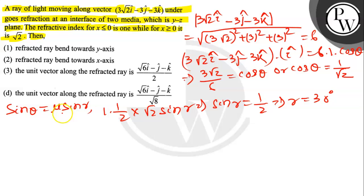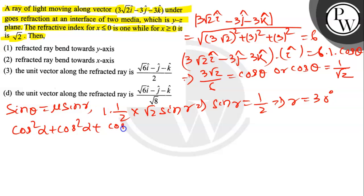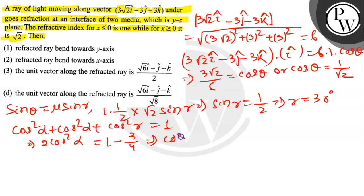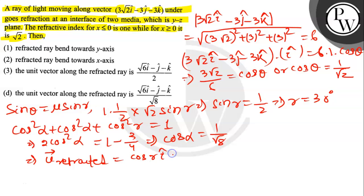Let the angle made by the refracted ray with the y-axis and z-axis be alpha. Then cos²α + cos²α + cos²r = 1, so 2cos²α = 1 - 3/4. Therefore cos α = 1/√8. So the refracted ray unit vector is: cos r î - cos α ĵ - cos α k̂.